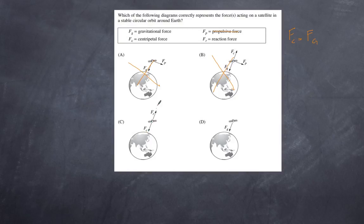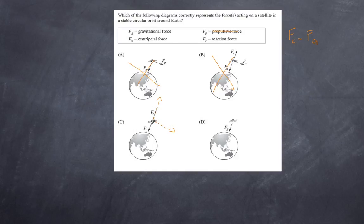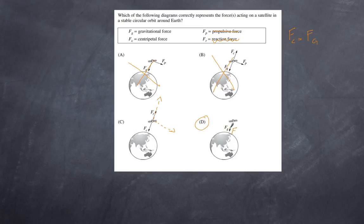A common fallacy is the idea that there is some force pushing the satellite outward. That's incorrect. If I remove the centripetal force pulling the satellite in, the tendency is for the object to continue horizontally — the direction it was already traveling. There is no such thing as a reactive outward force. Therefore the only possible answer is D. As stated, the gravitational force is the centripetal force, so if the examiner labeled it Fc instead of Fg, that would still be correct.